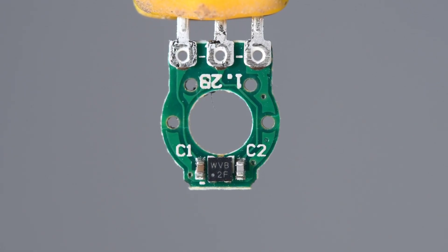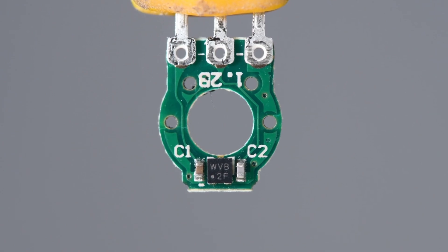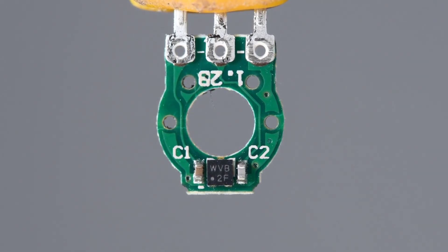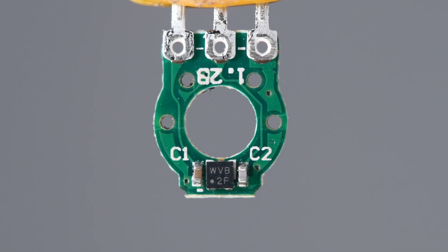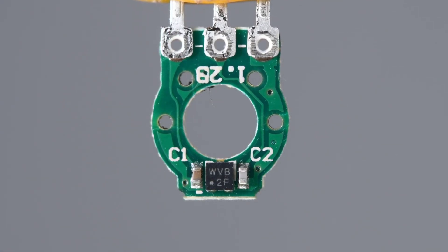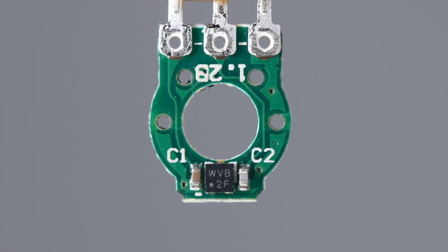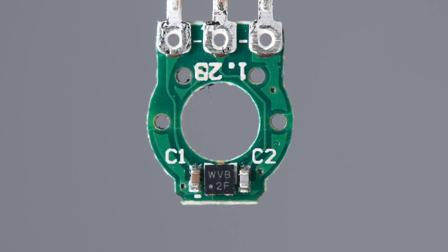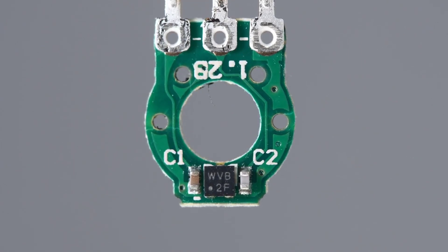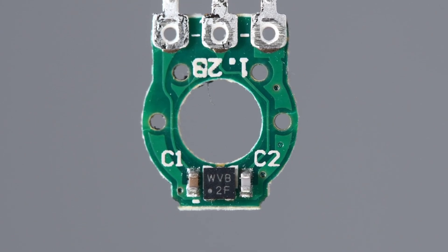Looks like a 3-lead DFN package. WVB on the top line of the IC and 2F on the bottom line. And two capacitors. C1 looks like it's connected to the 1.8 volt line. And C2 is connected to the output line, the center pin of the sensor. So there is some kind of output filtering.